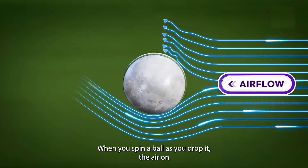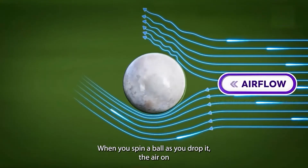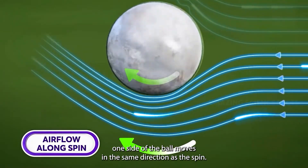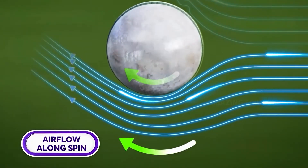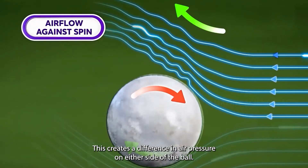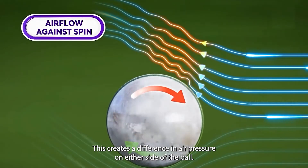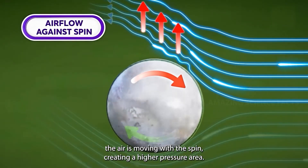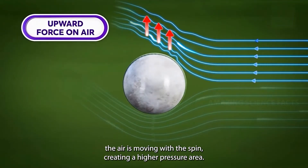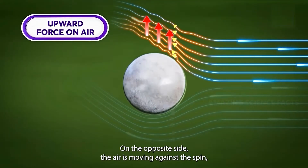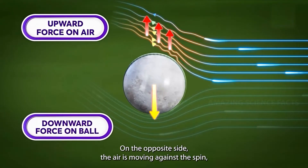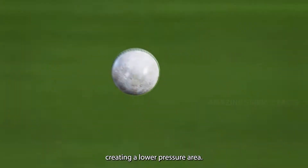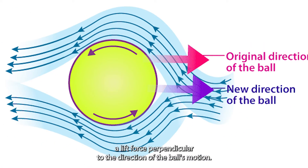When you spin a ball as you drop it, the air on one side of the ball moves in the same direction as the spin. This creates a difference in air pressure on either side of the ball. On the front side, the air is moving with the spin, creating a higher pressure area. On the opposite side, the air is moving against the spin, creating a lower pressure area.